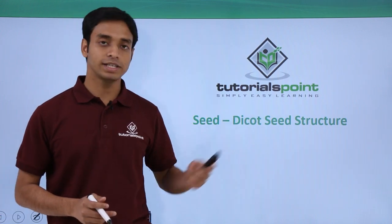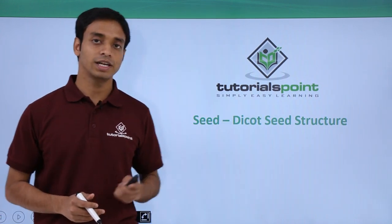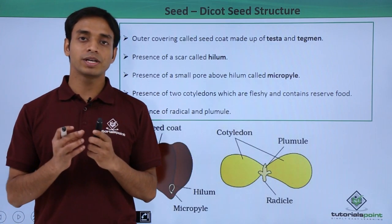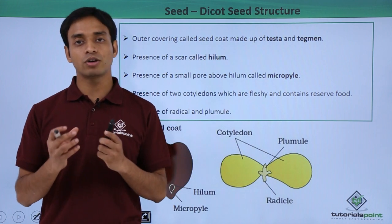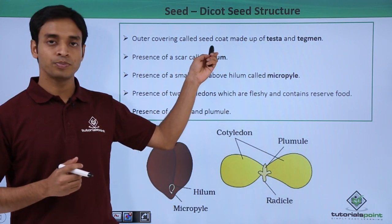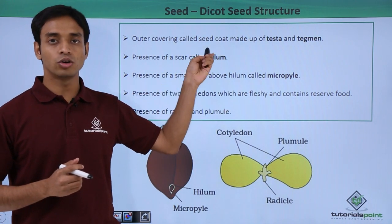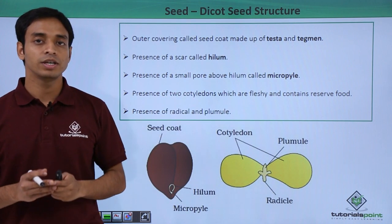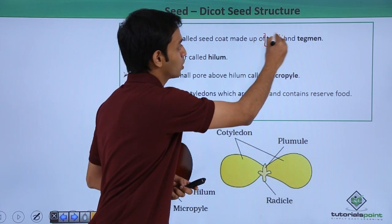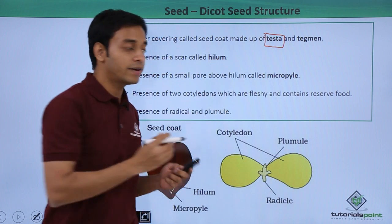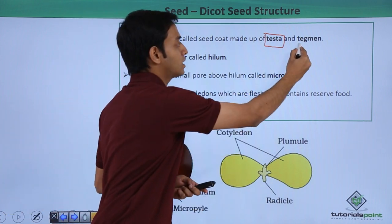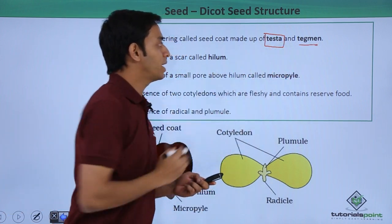In this video we are going to talk about the dicot seed structure. The typical surface of a dicot seed is made up of the seed coat. This seed coat is made up of two layers: the outermost layer is known as the testa, whereas the layer interior to the testa is known as the tegmen. So testa and tegmen make up the seed coat.